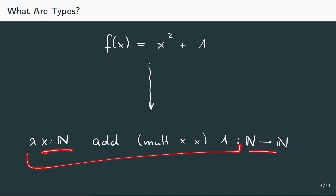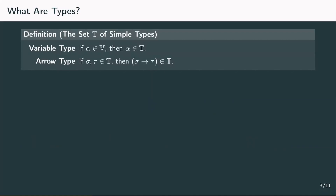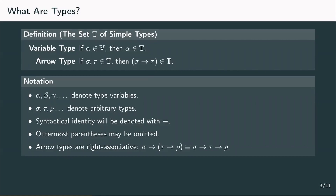For the lambda calculus, the set of simple types is constructed as follows. As with lambda terms, we have a finite set of variables v, and each type variable is a type by itself — a variable type. We can also combine two types with an arrow to get an arrow type. These types are called simple since we can only do one thing: attach another type. We can have a single type variable or create a long chain of arrow types, nothing else. We're going to use small Greek letters like alpha, beta, gamma for type variables and sigma, tau, and rho for any types.